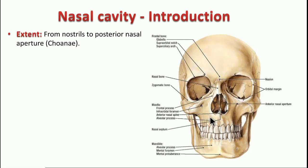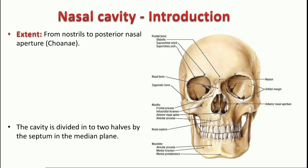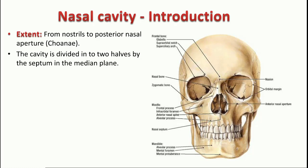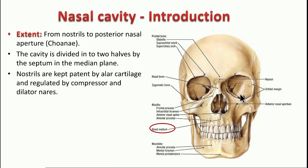The cavity extends from the nostrils — as seen in the previous slide on the external nose — to the posterior nasal aperture. You can also see the anterior nasal spine here, and this anterior opening is called the piriform aperture.